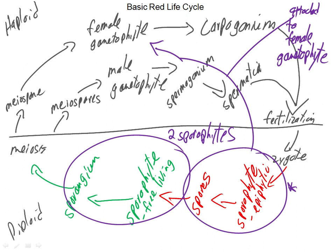Another difference is that we have differentiated sexual organs now. We've got a carpogonium, and a spermatangium — I checked the notes today and spermatangium is the correct term. The spermatia come out of the spermatangium. The female side has a very specific kind of shape and structure, different from what we've seen before.